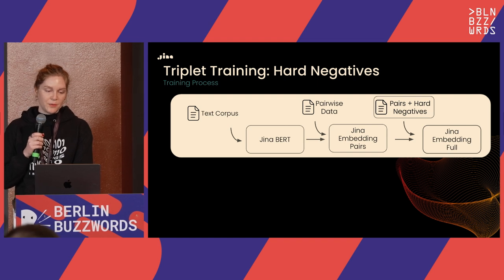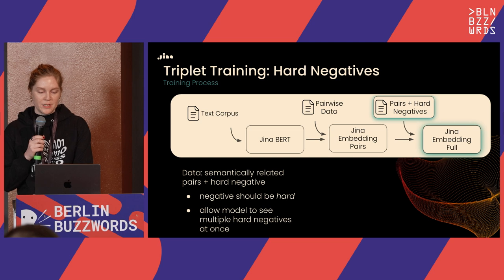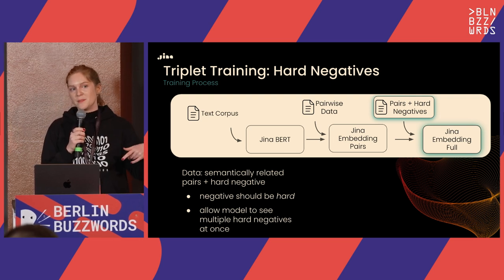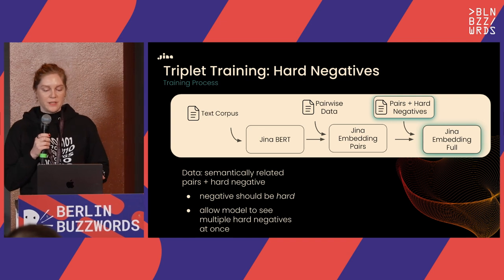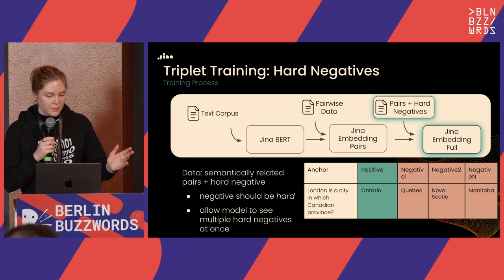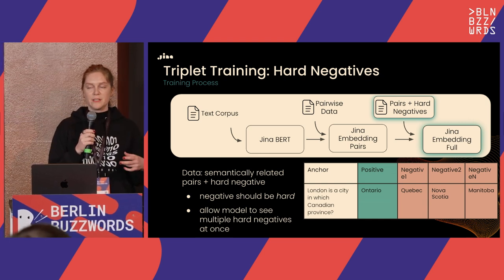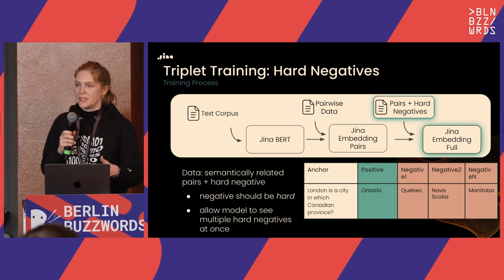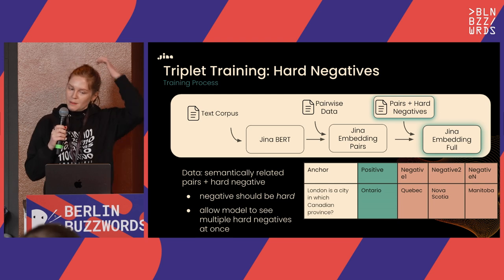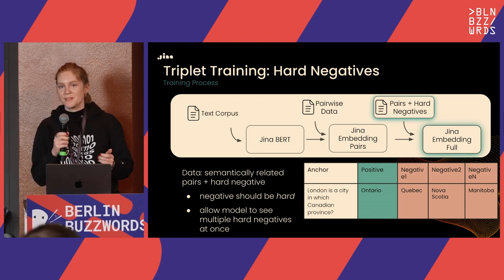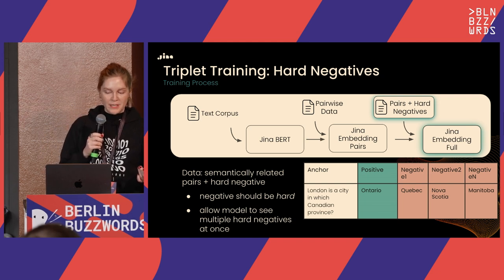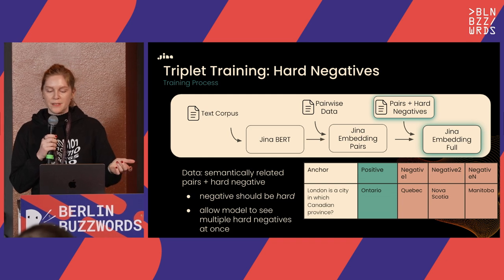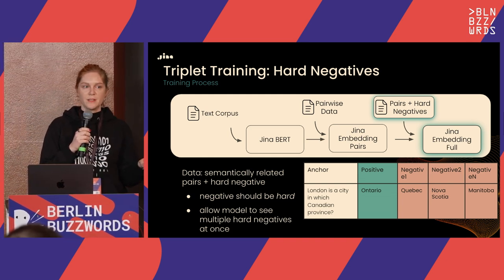Next comes hard negative or triplet training, similar to pairwise training but with a hard negative component. These negatives are actually mined hard negatives — not just other items in the batch. For example: 'London is a city in which Canadian province?' — the positive is Ontario, but hard negatives are Quebec, Nova Scotia, Manitoba (semantically related as Canadian provinces). An easy negative would be England since it's not a Canadian province at all. Importantly, the model sees multiple hard negatives at once.